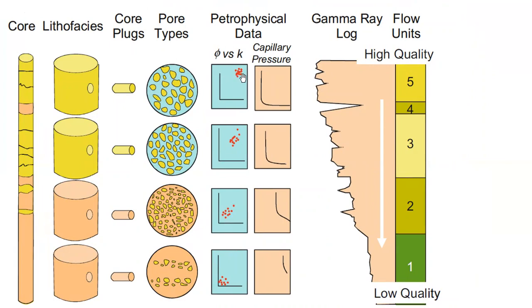For the first rock class, porosity is high and permeability is high, and the data is quite homogeneous. The second class has quite high porosity and quite high permeability, but it is more heterogeneous — the range is bigger. The third class shows moderate porosity and moderate permeability. The fourth class has low permeability and low porosity.